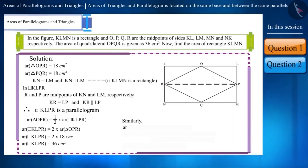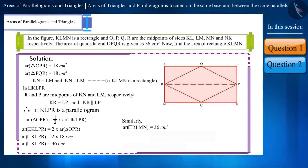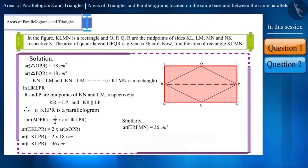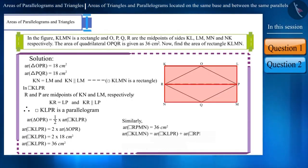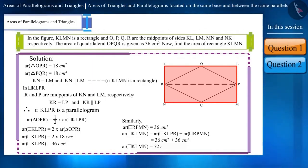Similarly, the area of parallelogram RPMN will also be 36 cm², and these two together consist of rectangle KLMN. The area of rectangle KLMN will be equal to the sum of the areas of parallelogram KLPR and RPMN. Thus, we get the area of rectangle KLMN as 72 cm².